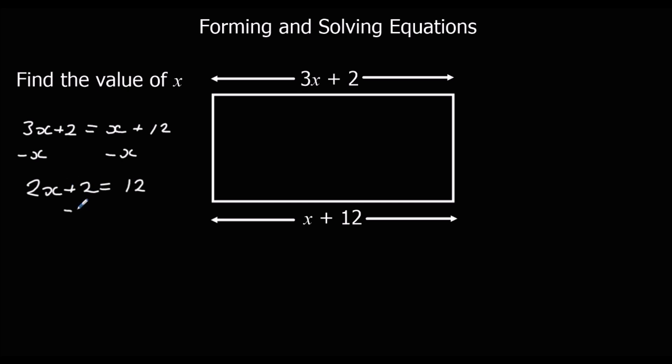To do that, I'm going to take 2 away from both sides. That leaves me with 2x equals 10. I can half both sides. x equals 5.